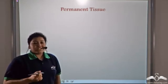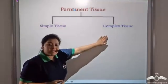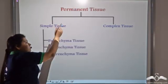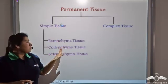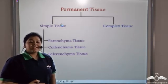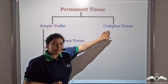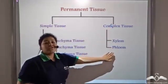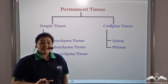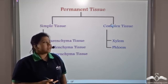So permanent tissue can be divided into two categories: simple permanent tissue and complex permanent tissue. Simple permanent tissue can be further divided into three kinds — parenchyma, collenchyma, and sclerenchyma — all of which contain one kind of cell. But complex tissues like xylem and phloem, which form the conducting tissue system of the plant, are made up of more than one kind of cell — parenchyma cells and sclerenchyma cells — and hence are known as complex tissue.